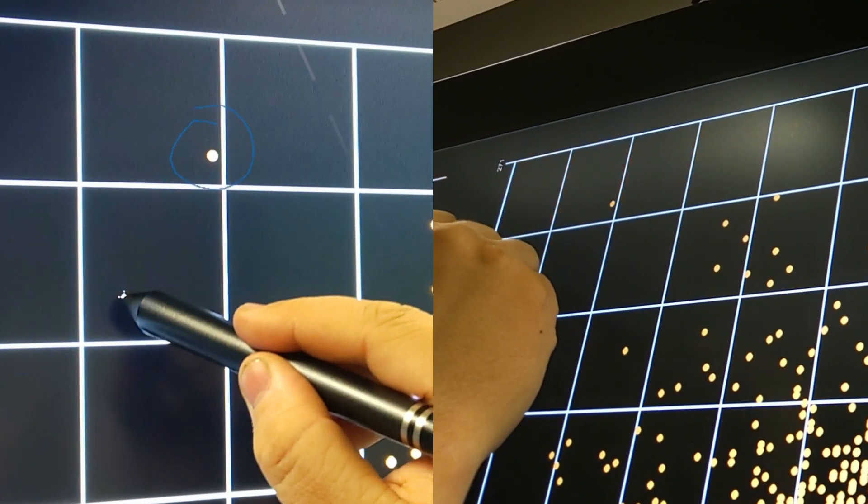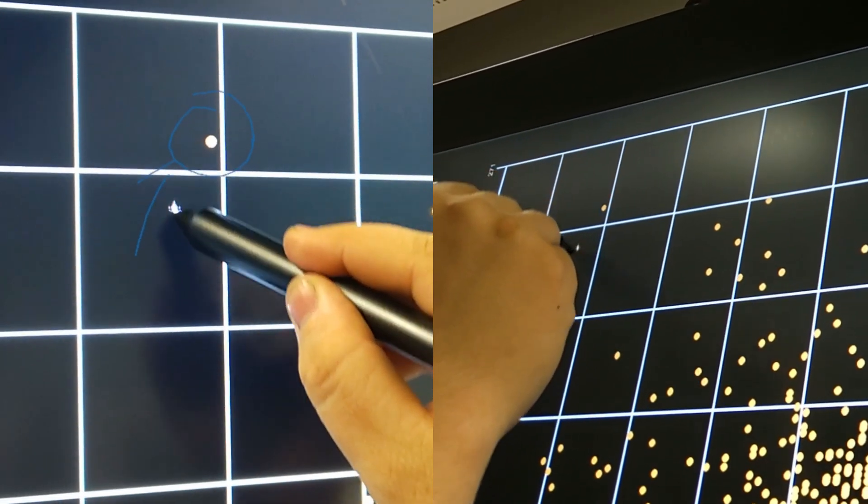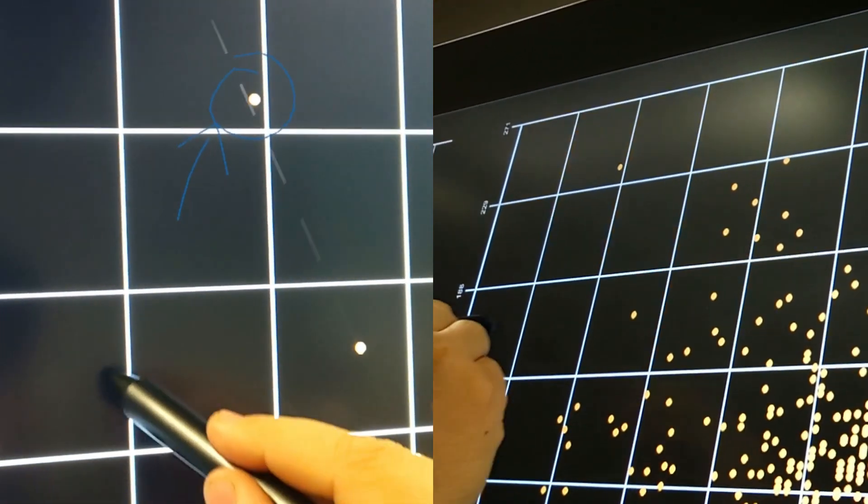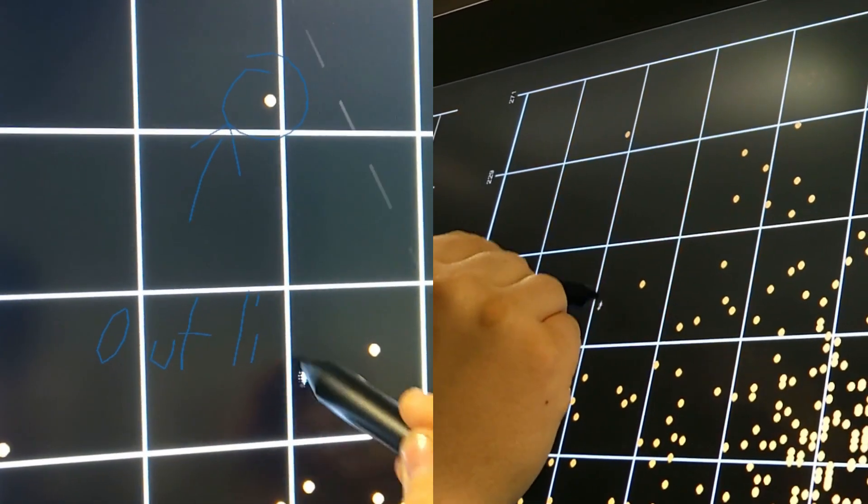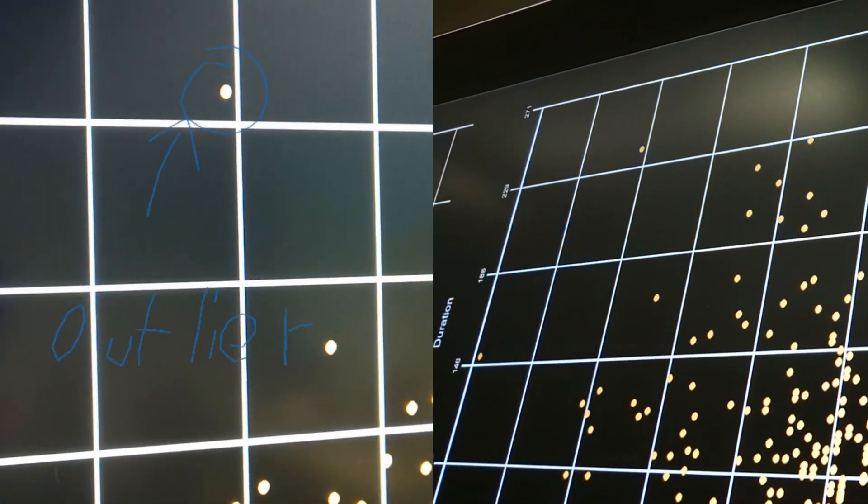When exploring data, users benefit from annotating visualizations. We propose to move sketchings, drawings, and notes into AR space to keep them private and to avoid visual clutter on the display for other users.